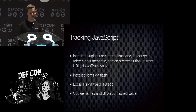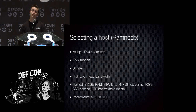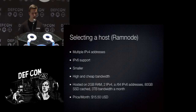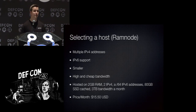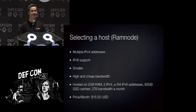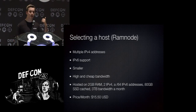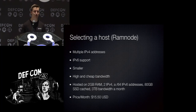We need somewhere to host all of this. Requirements: multiple IPv4 addresses so we can answer each question with a different IP, IPv6 support to evaluate IPv6 usage, and really cheap bandwidth in case a big DNS resolver like Google DNS or Comcast caches our results and starts serving it to millions of customers. I also wanted a smaller company that would actually look out for their customers if legal threats arrived. I ended up settling on RAM node — a small VPS with three terabytes of bandwidth a month for about $15 a month.